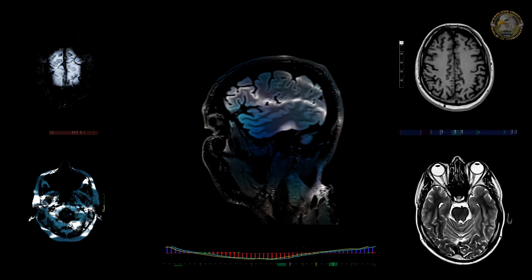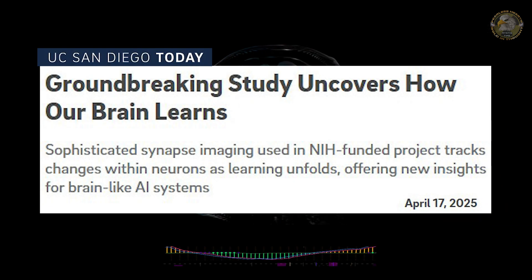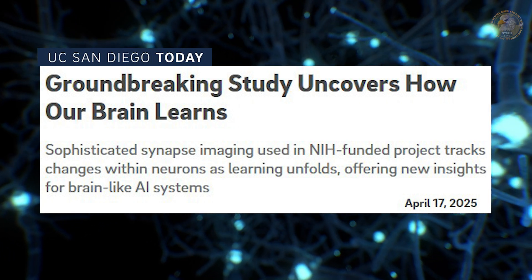Thanks to researchers at UC San Diego, we now know the brain doesn't follow one simple rule book when it comes to learning. It follows multiple, and sometimes at the exact same time.